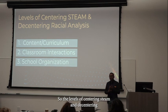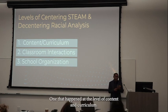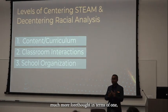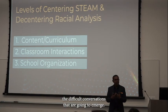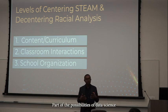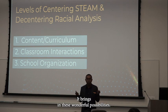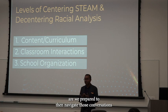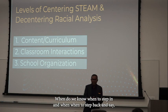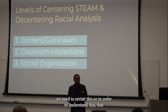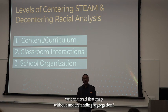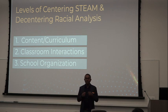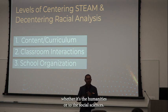The levels at which centering STEAM and de-centering racial analysis happen occur at multiple levels. One is at the level of content and curriculum — if that example were to be used, there should have been much more forethought about how to incorporate it and how to facilitate the difficult conversations that would emerge. Part of the possibilities of data science is that it's data rich and context rich. But if it's going to bring in these possibilities, to what extent are we prepared to navigate those conversations? We can't read that map without understanding segregation and redlining. Within STEM, we need the humility to look elsewhere — to the humanities or social sciences — to understand this fully.